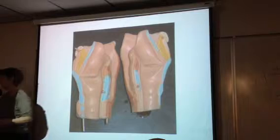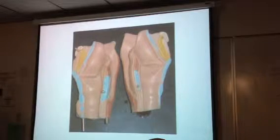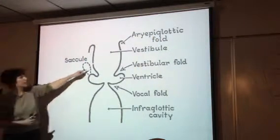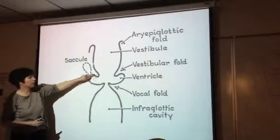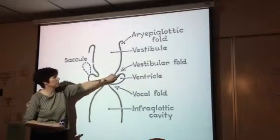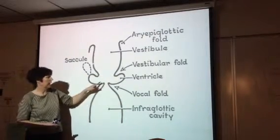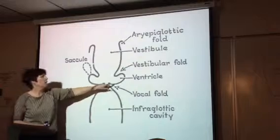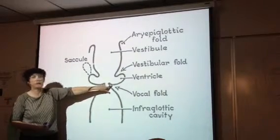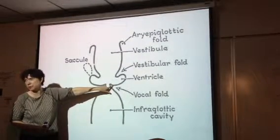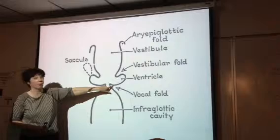If we look at it in cross section, this would be the false or vestibular fold, and the lower one is the true or ventricular fold. This is where the vocal ligaments that create sound — the true vocal cords — are found.